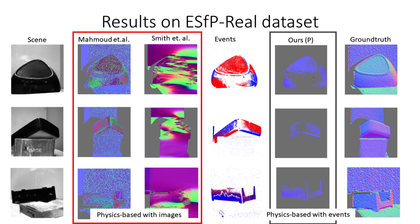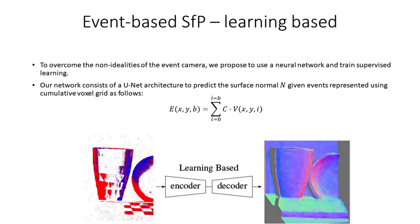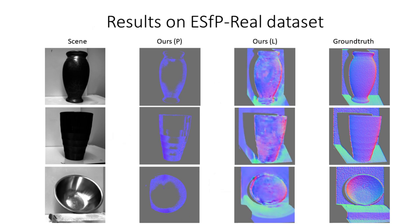We therefore propose to tackle the problem of estimating the surface normals using a deep learning approach. We propose the cumulative voxel grid representation, a variation of the voxel grid. By leveraging learned data priors, it can recover accurate normals even in the presence of very few events.